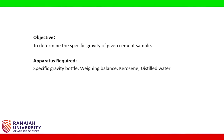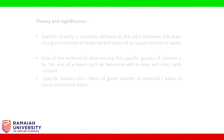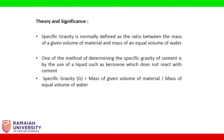Apparatus required: specific gravity bottle, weighing balance, kerosene, and distilled water. Specific gravity is normally defined as the ratio between the mass of a given volume of material and the mass of an equal volume of water. One of the methods of determining the specific gravity of cement is by use of a liquid such as kerosene, which does not react with cement.